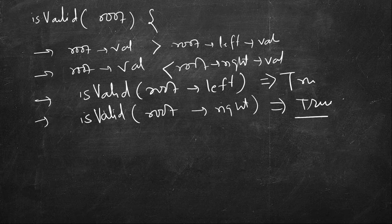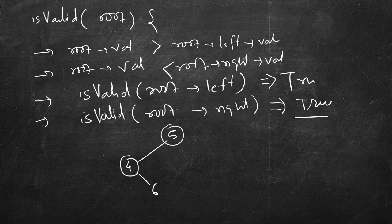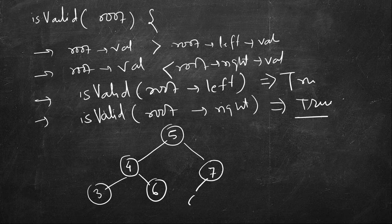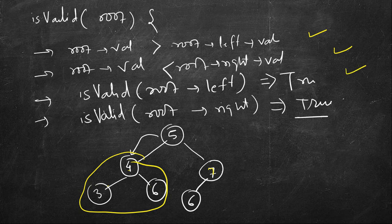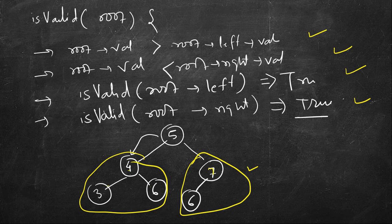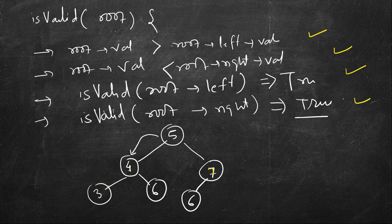Let's consider another example to see a missed case. Suppose we have root 5, left child 4 with children 3 and 6, and right child 7. Checking root's right: 7 is correct. The left subtree of 4 is valid — left is 3, right is 6. So all four conditions appear true. But should we return that this is a valid BST? In fact, no — let's see why it's not enough to just check the immediate left and right children.